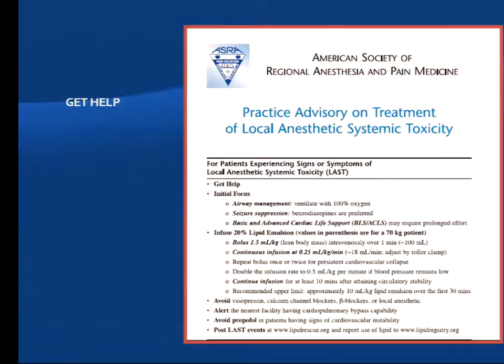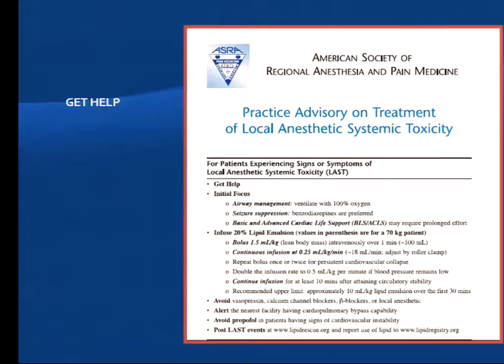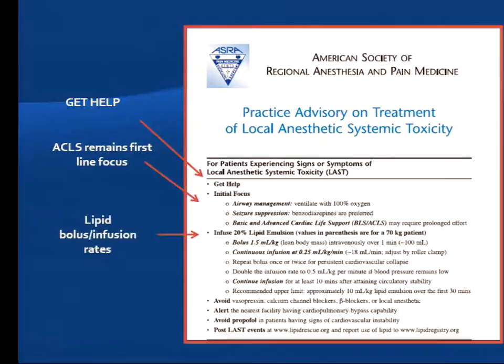What do you do? Get help. ECLS remains our first line of focus. Infuse lipid at 1.5 milligrams per kilogram, then start an infusion at 0.25 mL/kg per minute. You can redose your bolus and increase the infusion as needed. Avoid vasopressin, calcium channel blockers, beta blockers, and local anesthetics. Remember that you may need bypass regardless.